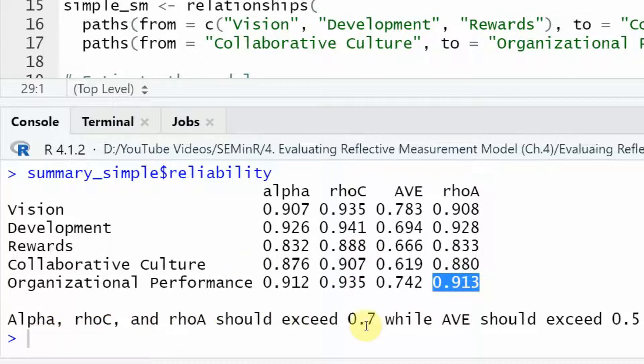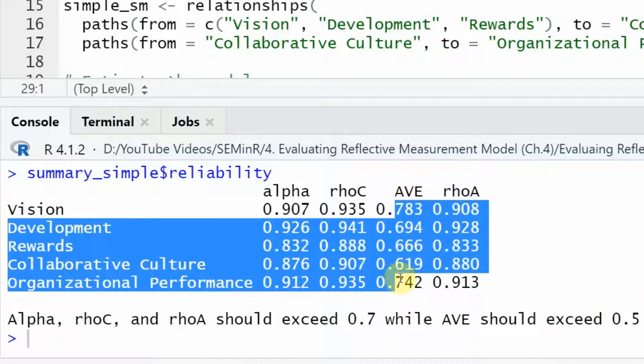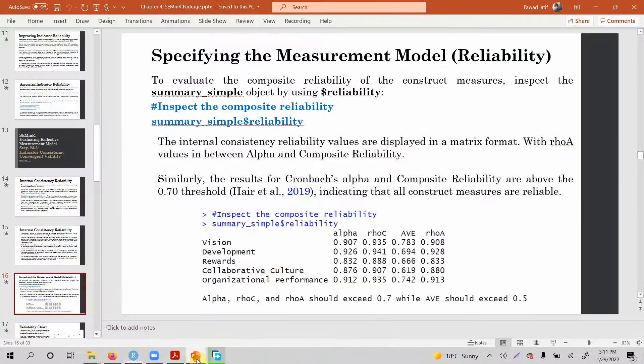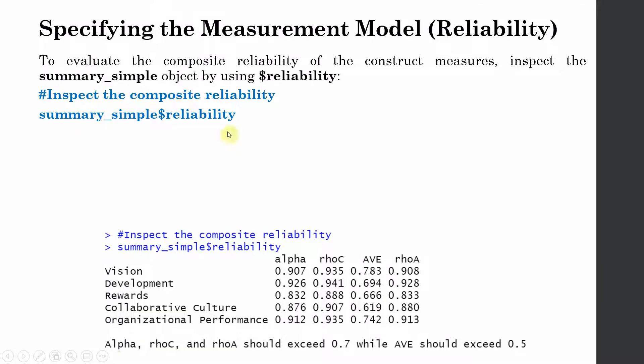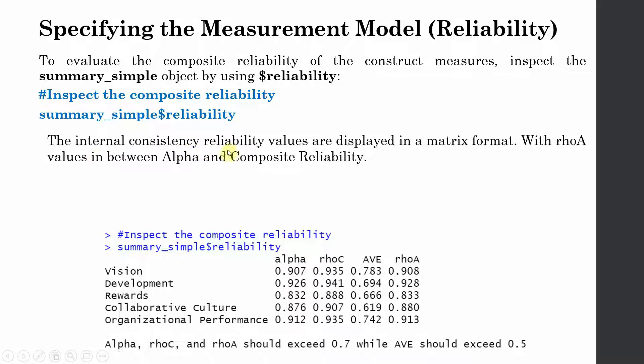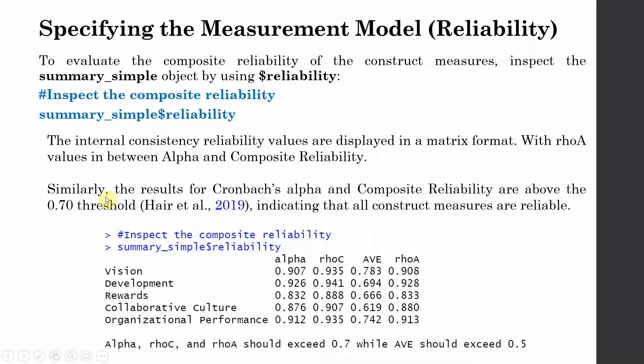Alpha, rho C and rho A should exceed 0.7 while AVE should exceed 0.5. So what is this here? You are going to look into it. Let's go back to our presentation here. So this is how you inspect the composite reliability and other reliability measures. The internal consistency reliability values are displayed in the matrix format with rho A values in between alpha and composite reliability. Similarly, the results for Cronbach's alpha and composite reliability are above the 0.70 threshold indicating that all construct measures are reliable. Are they reliable in this case? Yes, they are reliable.